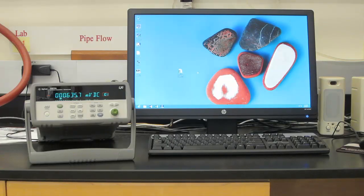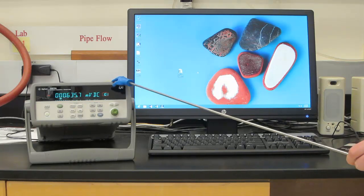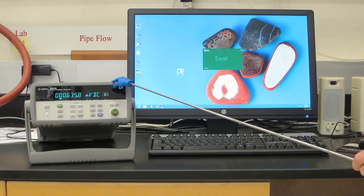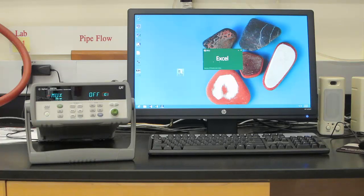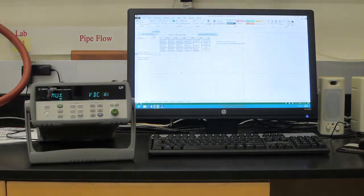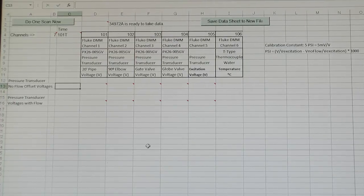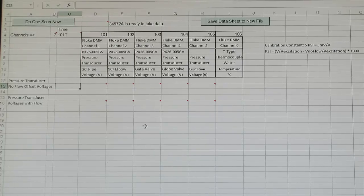Now to start this lab, you want to turn on the Agilent 34972A data logger. Open the Excel spreadsheet titled Lab 11 Pipe Flow Agilent Version 1.1. Be sure to enable macros when you do this.